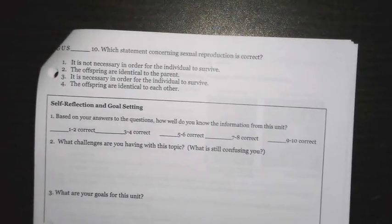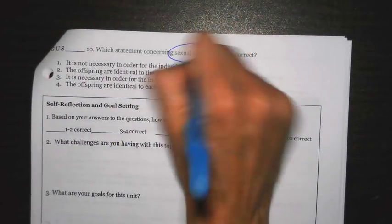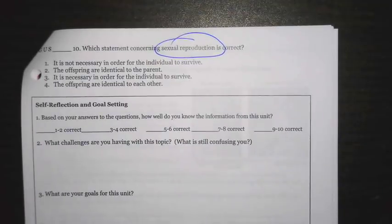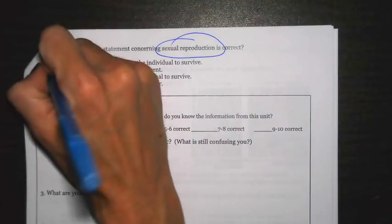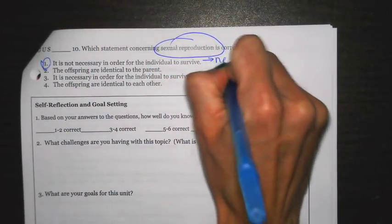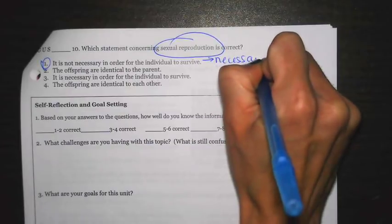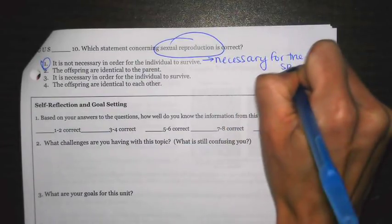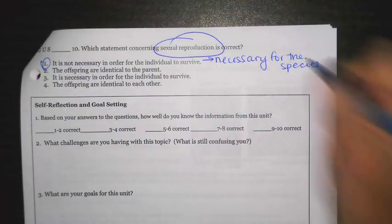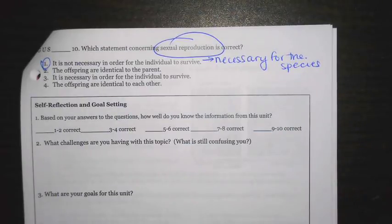And the last one says, which statement concerning sexual reproduction is correct? So here I have sexual reproduction. The correct answer for this is going to be one. It's not necessary in order for the individual to survive. Necessary for species. So think about it. You probably know people who've never had offspring before. They're still alive. You don't need to have children in order to survive. But if you wanted the human species to continue, then some individuals must have offspring.